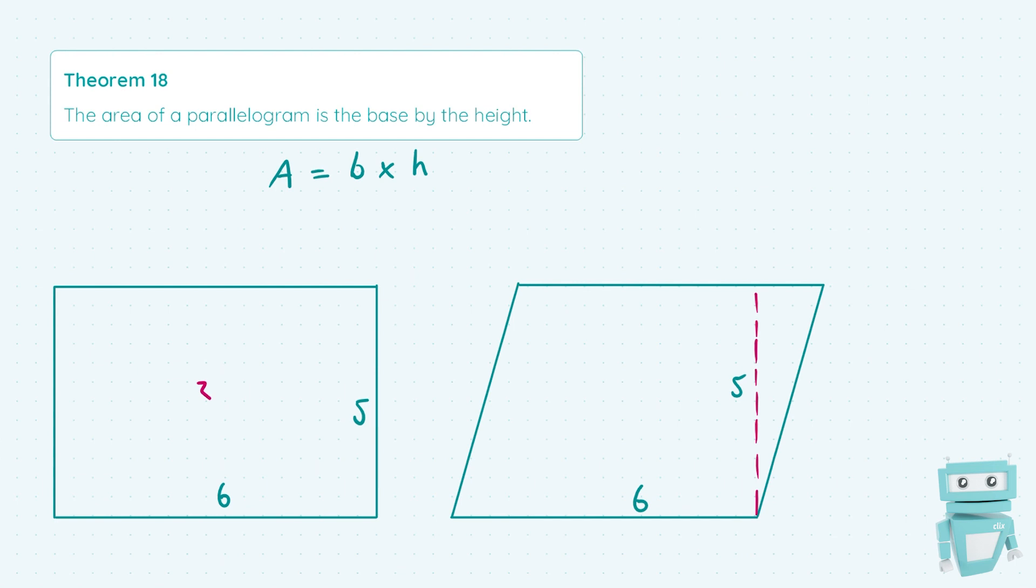As you can see in our other parallelogram here, the base by the height is actually the same, so the area of this one is 30 as well, even though we've slanted it a bit.